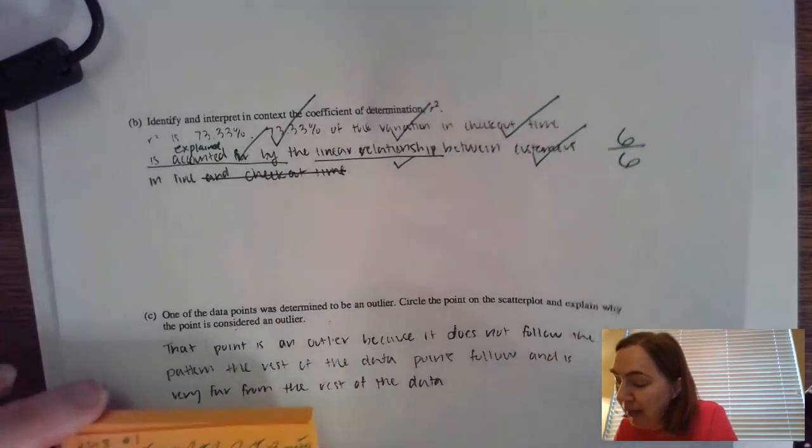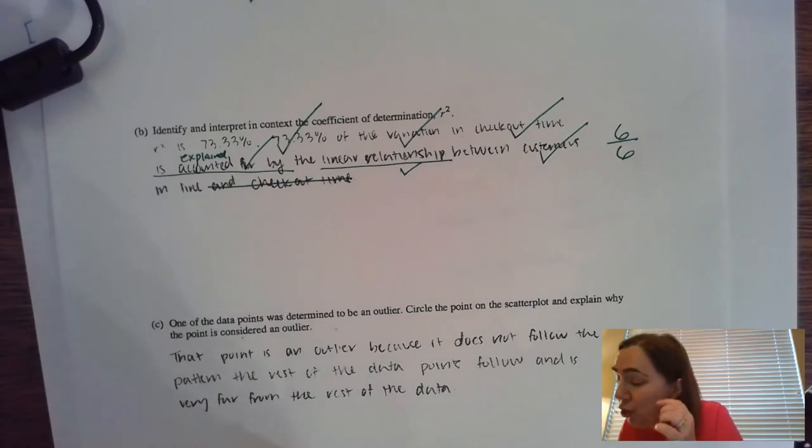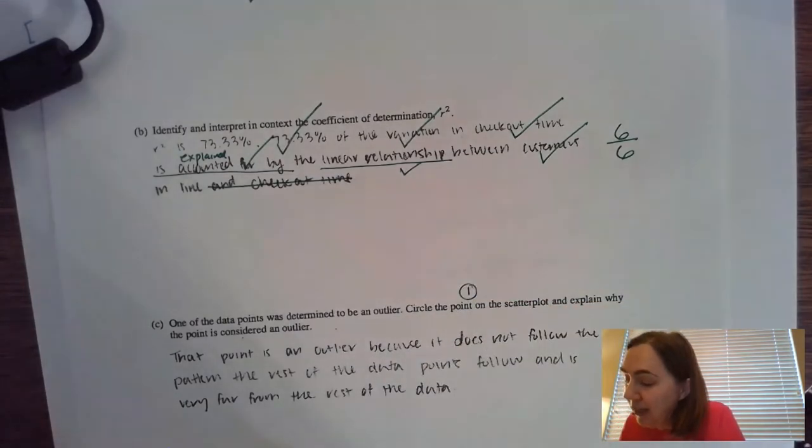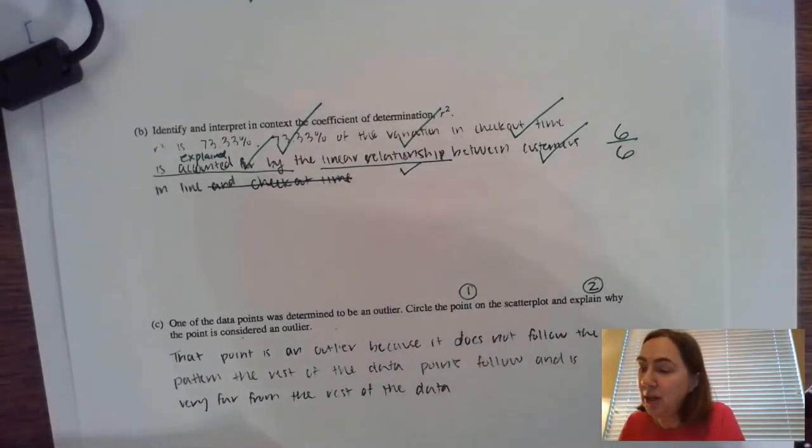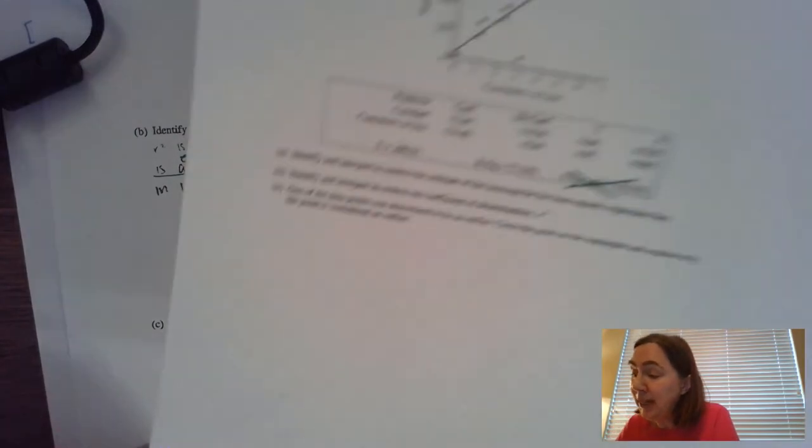Now the last one right here. It says one of the data points is determined to be an outlier. It says circle the point on the scatter plot. That's the first thing that you have to do is circle the point. And the second thing is explain why that point is an outlier. I actually graded this question on the AP and this is from 2018. This was one of my assigned questions that I graded hundreds upon hundreds of these particular questions.